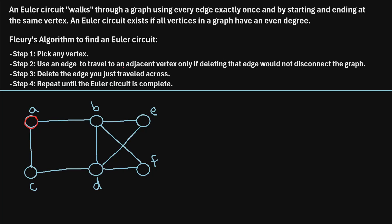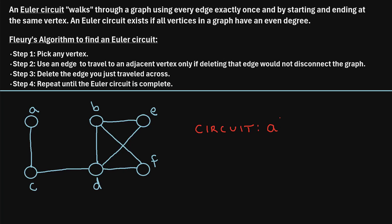Step two says use an edge to travel to an adjacent vertex only if deleting that edge would not disconnect the graph. When we're at vertex A, it has two adjacent vertices: B and C. Let's pick vertex B to travel to. If we go from A to B and delete this edge, would this disconnect the graph? If we remove that edge, we can see that the graph is still connected. So it's okay to travel from A to B to start our Euler circuit. So far our circuit is A, then B.